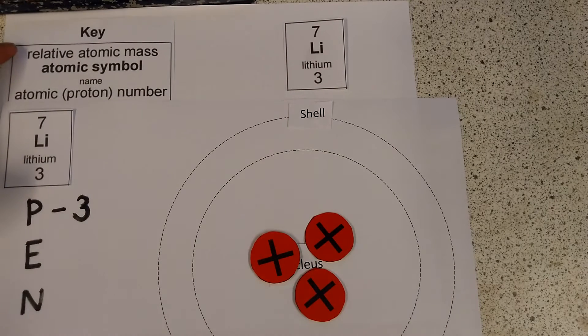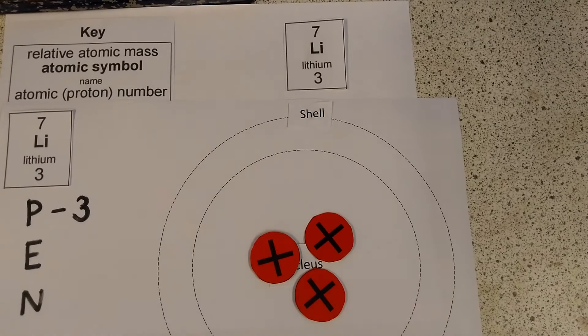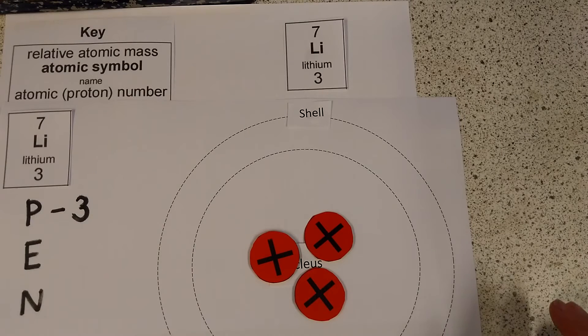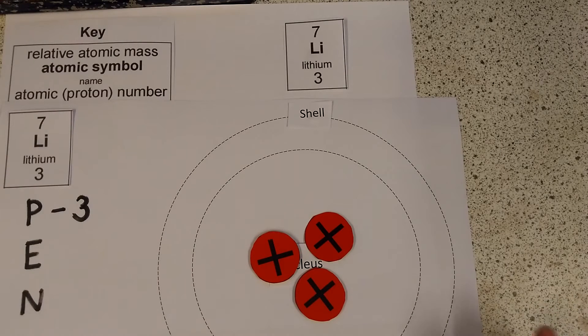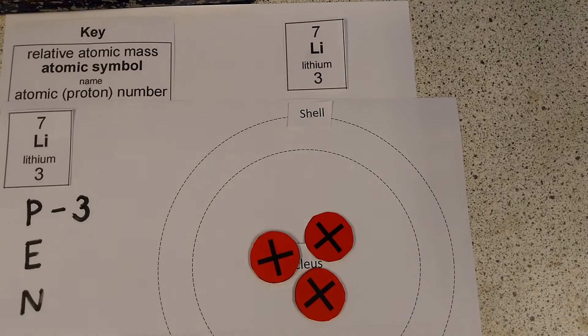Now it says up here that the relative atomic mass is the number at the top, this 7 here. And we already mentioned that those electrons are really tiny, they have such a tiny mass, we're not even going to bother about them. So basically what we're saying is that how much the atom weighs, how big its mass is, is just going to be decided by the number of protons and the number of neutrons.